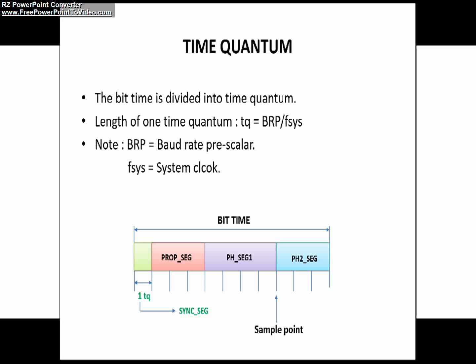That means the baud rate prescaler is divided by the system clock f-sys. The formulas are given in this slide. You can see here: this is the time quanta, one time quanta.